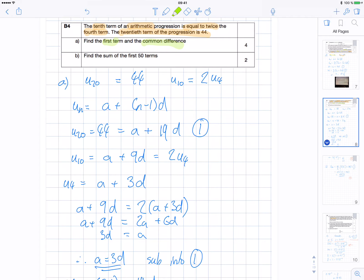So I wrote down the 20th term is equal to 44. The 10th term is equal to 2 lots of the 4th term.